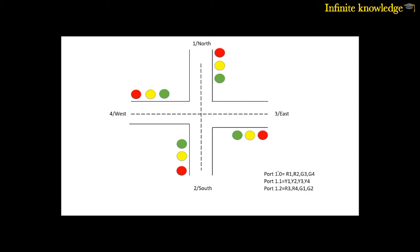In port 1.0 of the microcontroller, I have connected four different bulbs: R1 means red north side, R2 means south, G3 means this one, and G4 means this one.